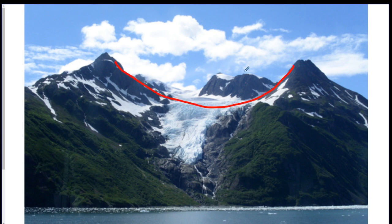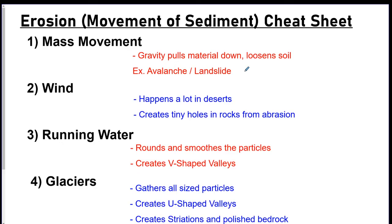Those are the agents of erosion. Here's a cheat sheet to get your thoughts together. The four causes of erosion are: mass movement, wind, running water, and glaciers. You might want to pause the video and jot these down — it would be really helpful. Thank you for being here, I hope all is well, and I'll see you on the next video. Bye.